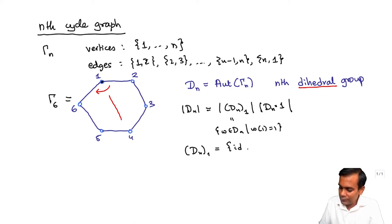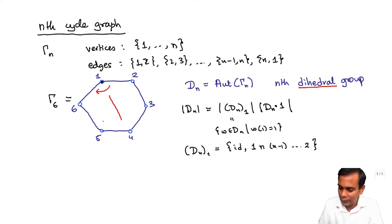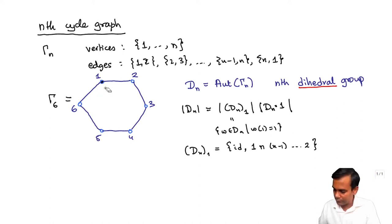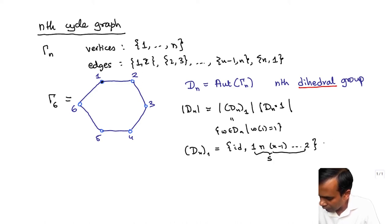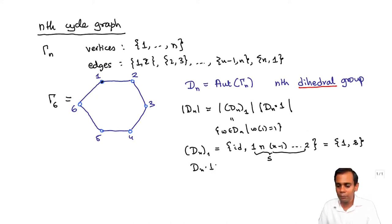The stabilizer of 1 in Dn has two elements. The first is just the identity element. The second is this reflection S, which takes 1 to 1, 2 to n, 3 to n−1, and n to 2 — it interchanges 2 and n, interchanges 3 and n−1, and so on. The orbit of 1: you can take the graph and move 1 to 2, 2 to 3, 3 to 4, 4 to 5, and 6 to 1 — that's a rotation by 60 degrees in the case of the hexagon.